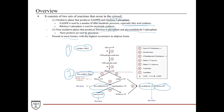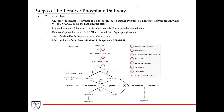The pentose phosphate pathway is present in most tissues, but has the highest occurrence in adipose tissue, which is significant because NADPH is such an important factor in fatty acid synthesis.